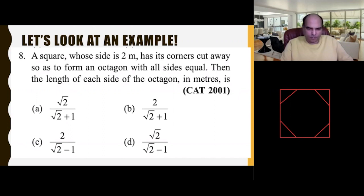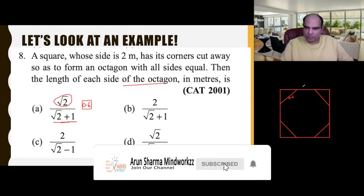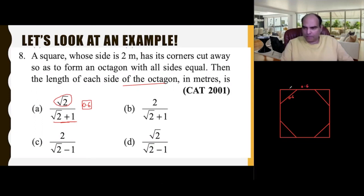When I look at my first option, the value of this is 1.41 and this is around 2.41, so approximately 0.6 is the value of this. If I think about 0.6 as the value of the side of the octagon, this must be 0.6 and this must be 0.6. You get a ridiculous situation where 'a' is 0.7 approximately.